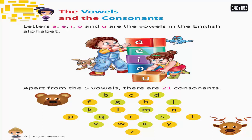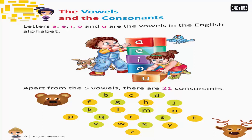The 21 consonants are: B, C, D, F, G, H, J, K, L, M, N, P, Q, R, S, T, V, W, X, Y, Z.